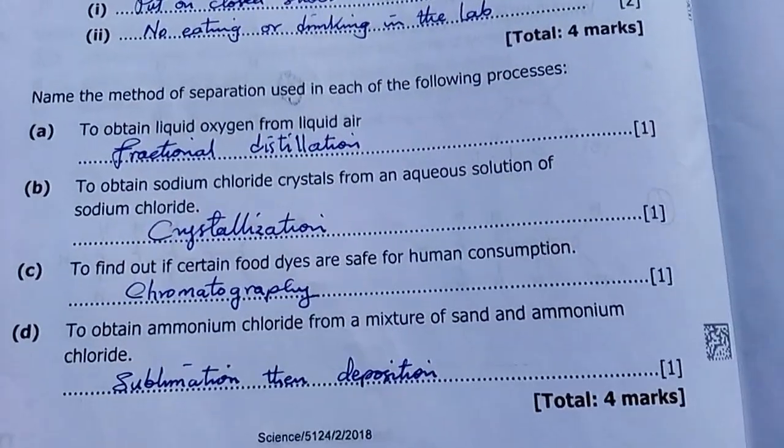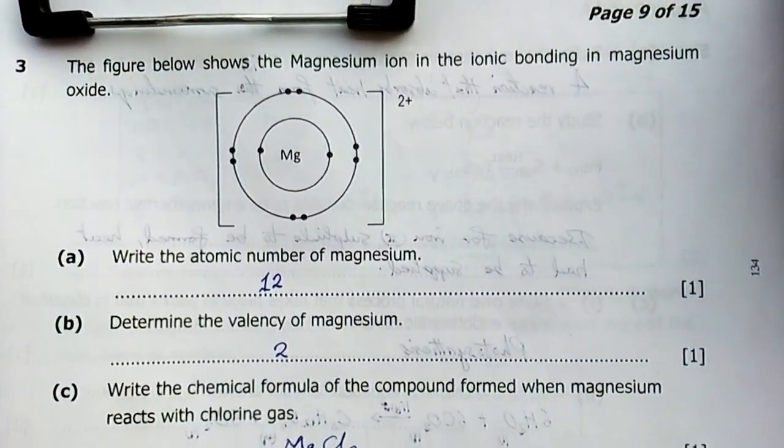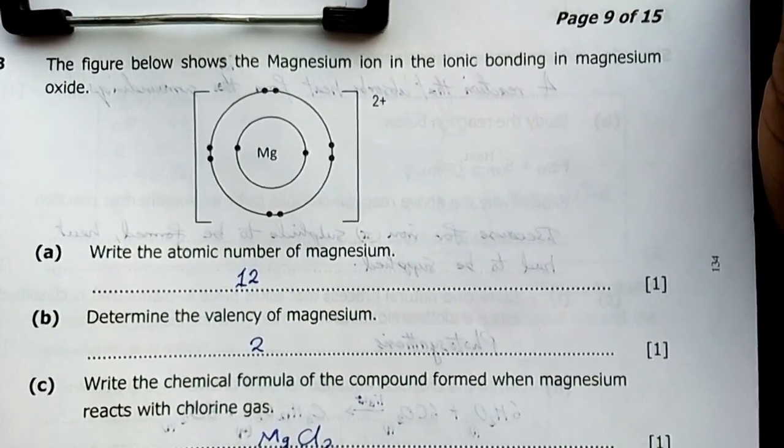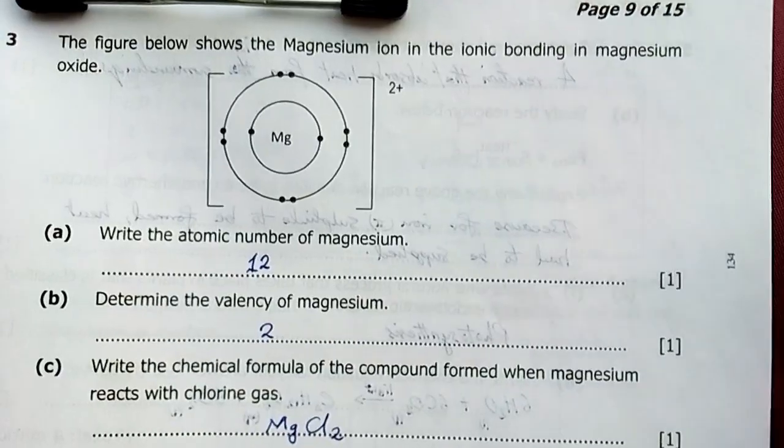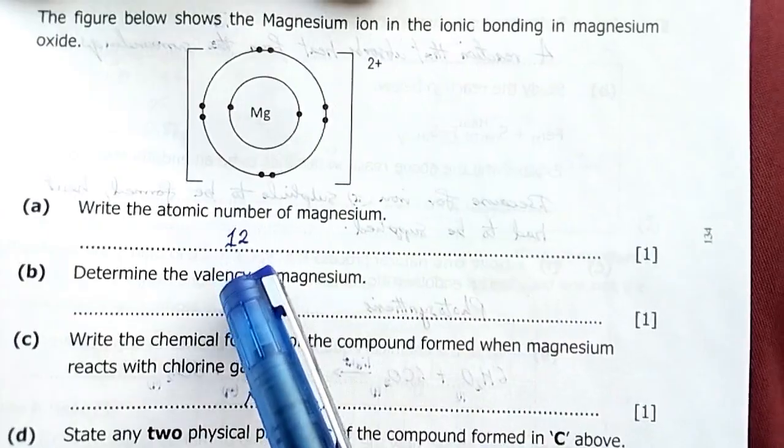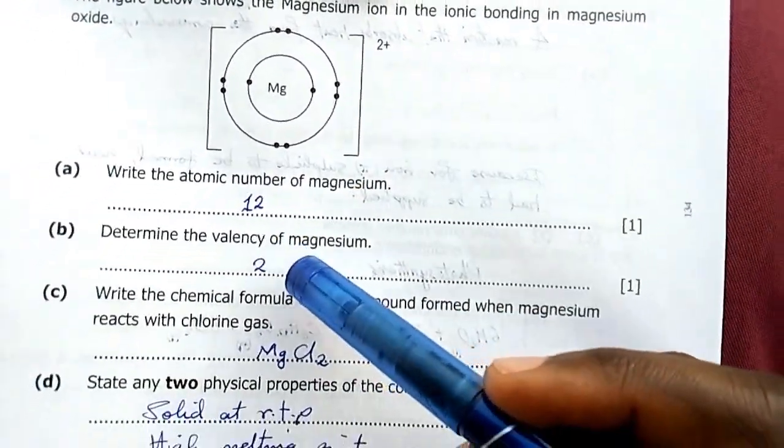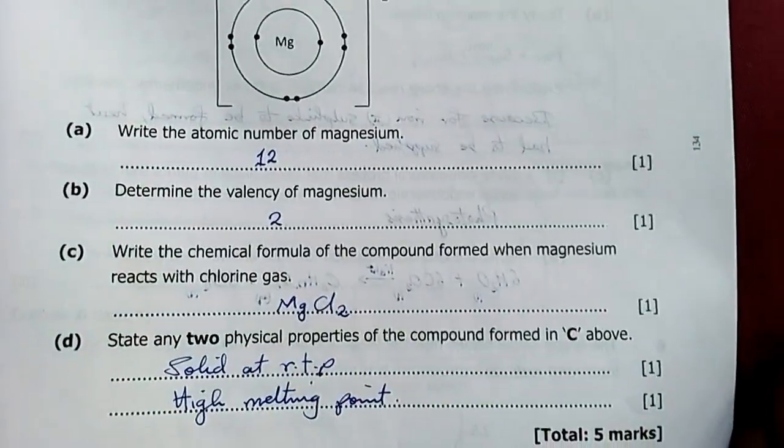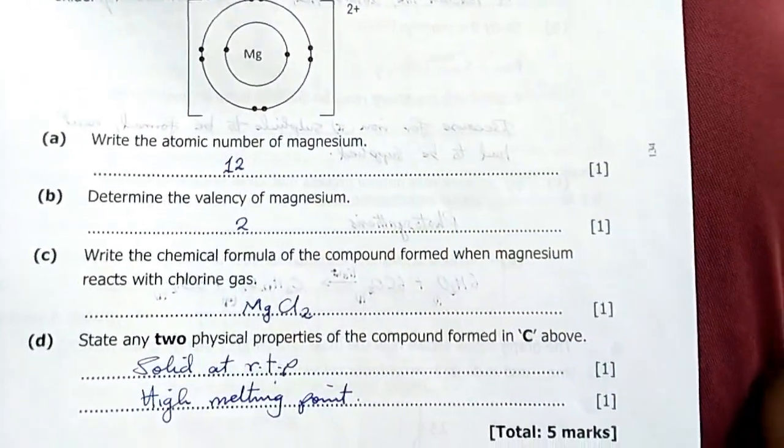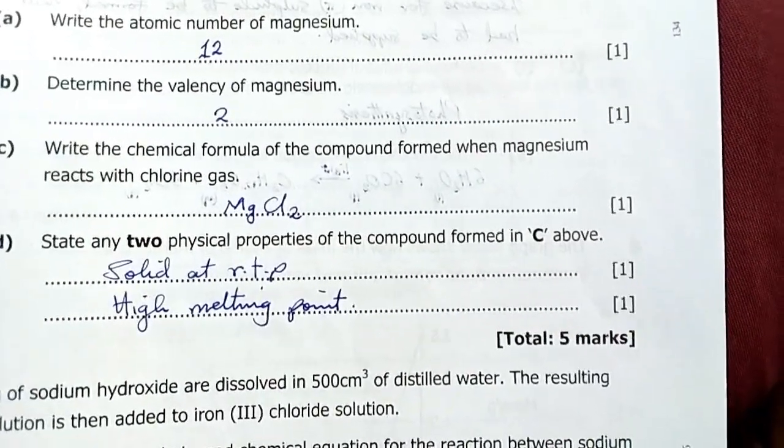Question 3: The figure below shows the magnesium ion in ionic bonding in magnesium oxide. Write the atomic number of magnesium. Atomic number is 12, despite the loss of two electrons. Atomic number means the number of protons, so it's 12. The number of electrons is only equal to the number of protons if the atom is neutral. Determine the valency of magnesium. Valency is 2.